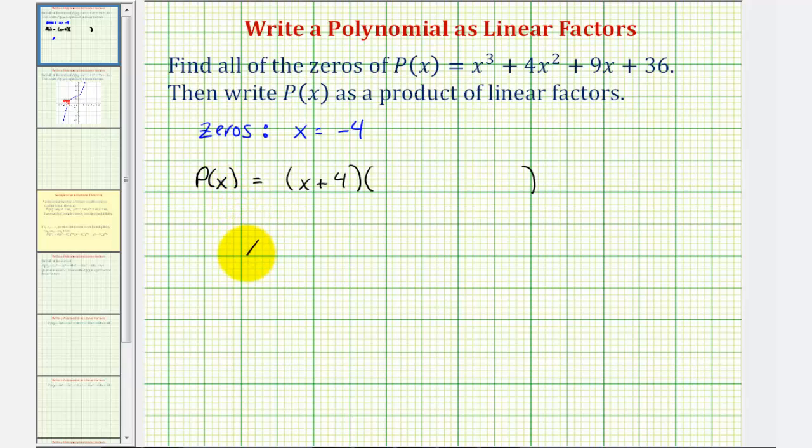So if we want to take x³ + 4x² + 9x + 36 and divide this by x + 4, we could use either long division or synthetic division. Let's go ahead and use synthetic division to perform this division. So for dividing by x + 4, we're going to use the constant or the zero -4 for synthetic division.